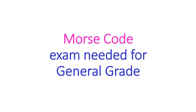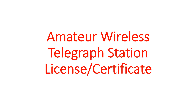A candidate can also write for both restricted and general grade examinations in the same sitting by paying the fees for both together. Upgradation from restricted grade will need passing of the general grade examination at a later date. Application for the examination and later for the license after passing are online through the Saral Sanjar portal to get the amateur wireless telegraph station license or certificate. From a choice of 3 callsigns provided by you, an available callsign will be provided.